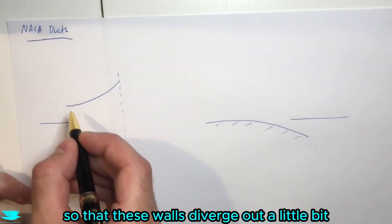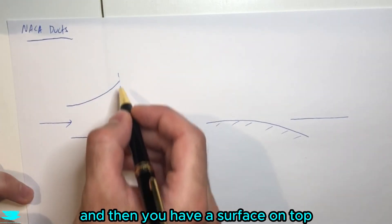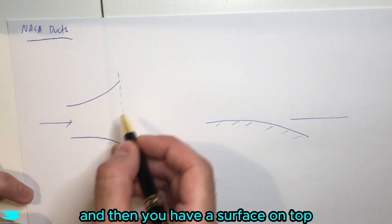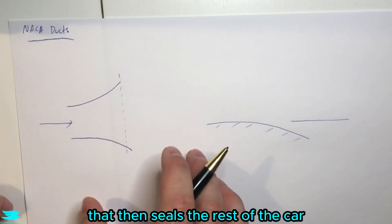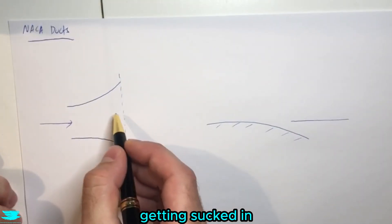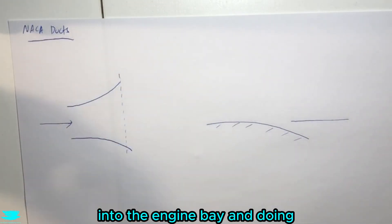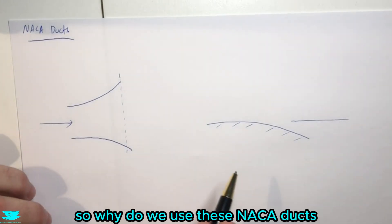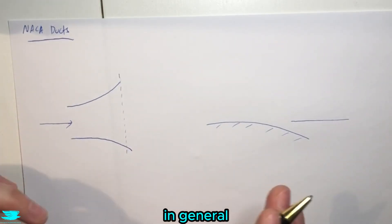So these walls diverge out a little bit, and then you have a surface on top that then seals the rest of the car. So now the flow is going underneath, getting sucked in into the engine bay and doing whatever you want. So why do we use these NACA ducts in general? How are they designed?